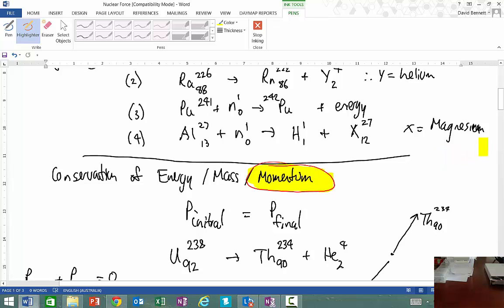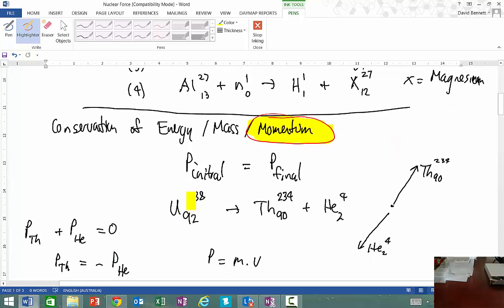Now, what we do know is in this reaction, where we have uranium decaying to thorium, and we did balance that one out. So we've got uranium decaying to thorium, and then decaying to helium. They're our two products.